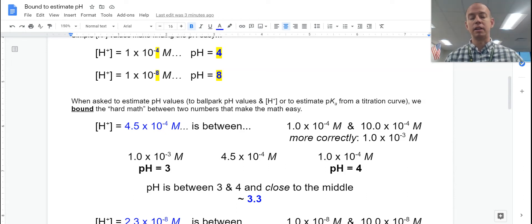By pounding or saying what two numbers that are easy to do the logs of is this value between. So 4.5 × 10^-4 M is bigger than 1 × 10^-4 but smaller than 10 × 10^-4. So we're saying it's between these two values and then we're thinking about, well this isn't really good scientific notation here. That's actually 1 × 10^-3 and this is where people sometimes rush through and make their mistakes.